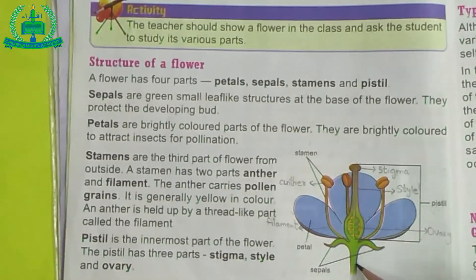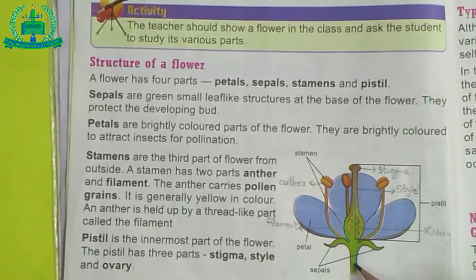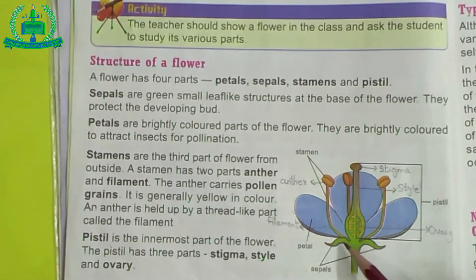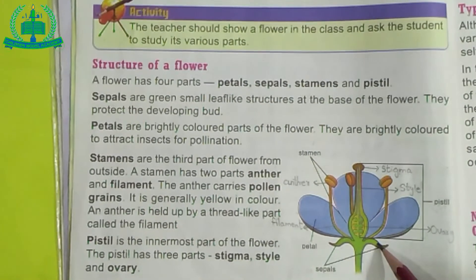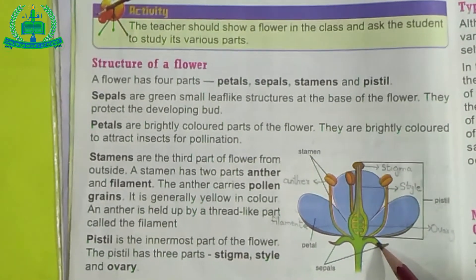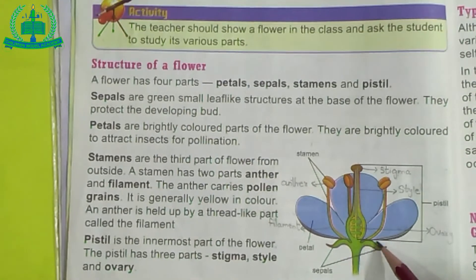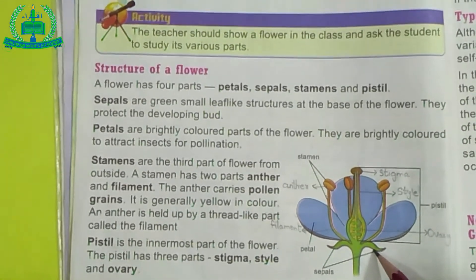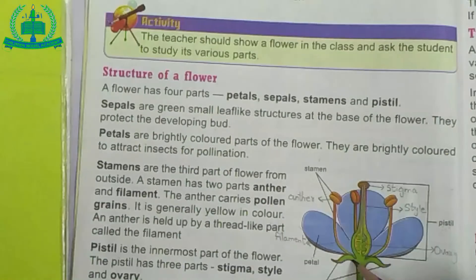Sepals. What are sepals? Sepals are small green leaves at the base of the flower. The sepals may remain free from one another. They protect the developing buds.